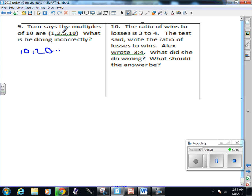And then the last one, the ratio of wins to losses is 3 to 4. The test said write the ratio of losses to wins, so Alex wrote 3 to 4. What did she do wrong? What should the answer be? What should be now?